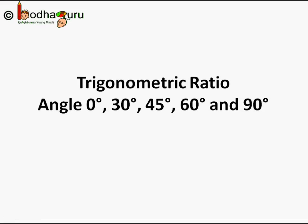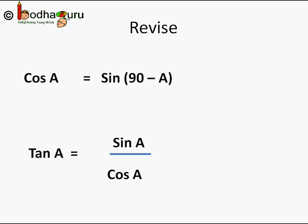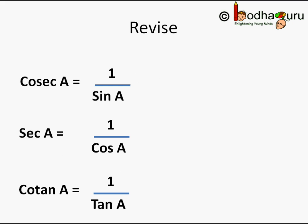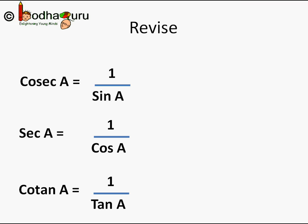Hello friends. In this video we are going to learn how to easily compute the trigonometric ratios for various angles without memorizing them. Let us revise a few things we learned in earlier videos: cos(a) = sin(90 - a), tan(a) = sin(a) / cos(a), cosec(a) = 1/sin(a), sec(a) = 1/cos(a), and cot(a) = 1/tan(a).